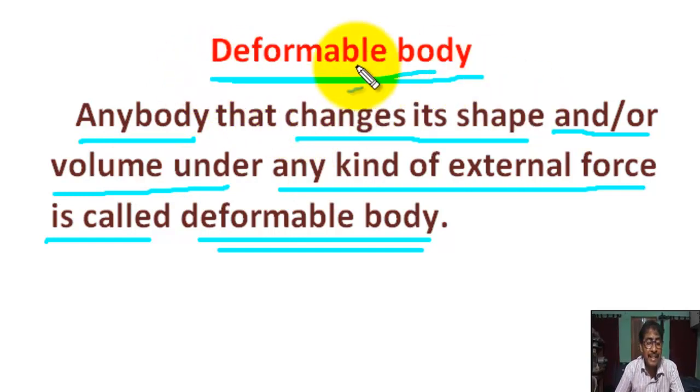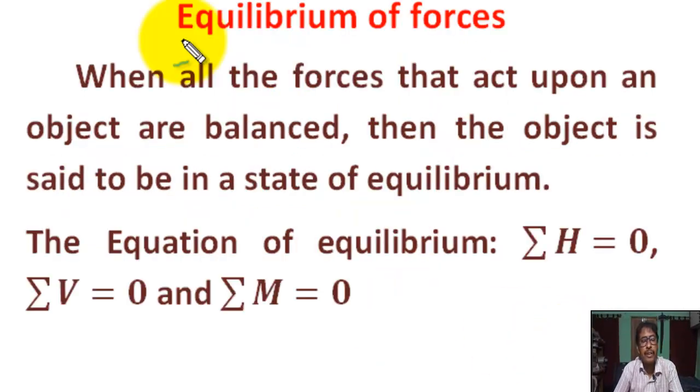Deformable body has mainly three types of deformations: brittle, ductile, and elastic. Deformable body materials can be plastic, wax, or cotton.